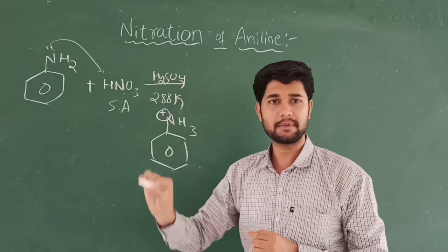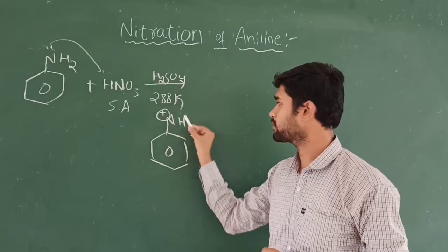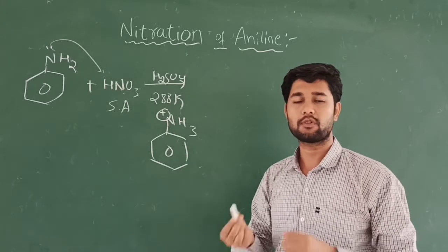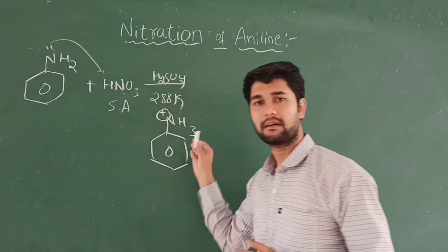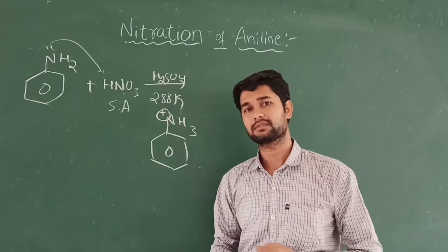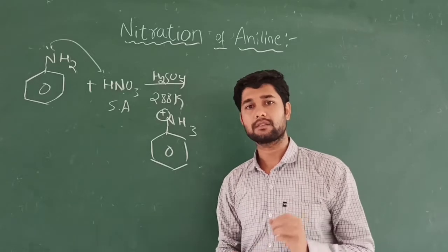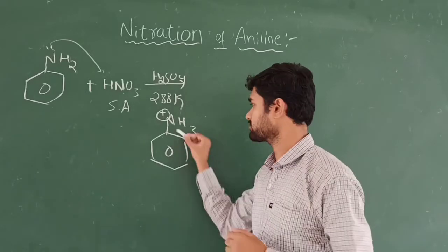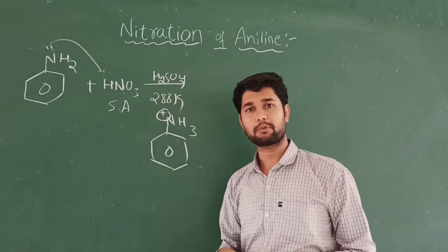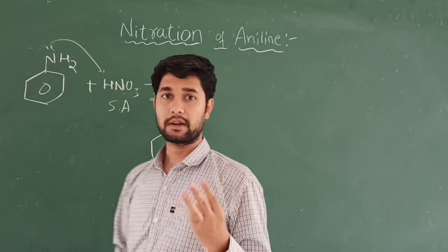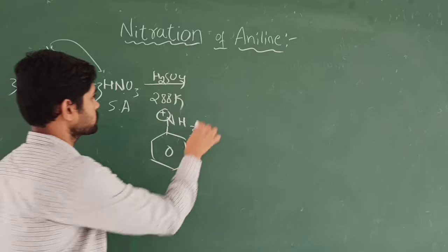Because the nitrogen is electron-deficient, it withdraws electrons from the benzene ring, decreasing the electron density. This means in the anilineum ion we expect three products: ortho, meta, and para. The anilineum ion acts as an electron-withdrawing group, so meta product is also expected here.